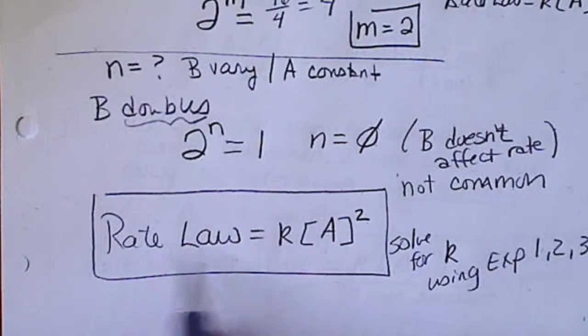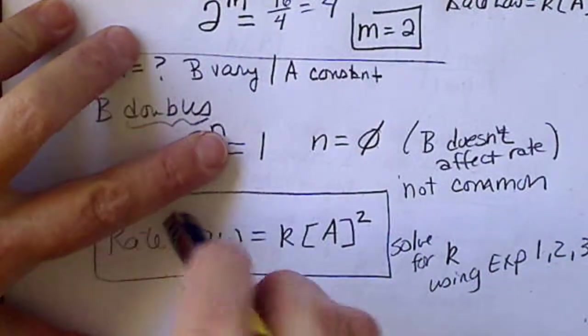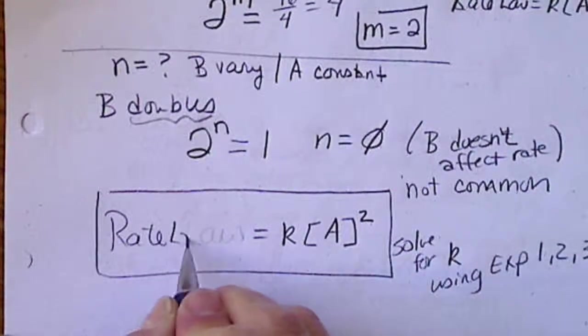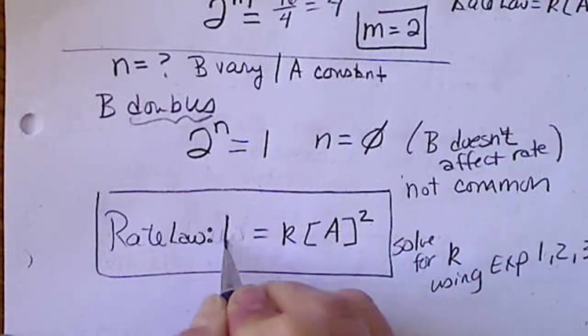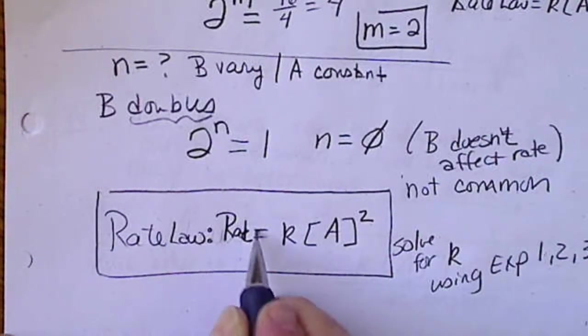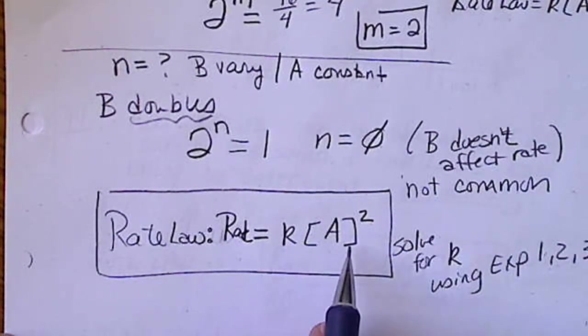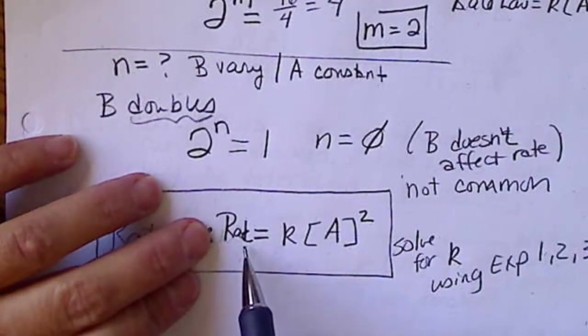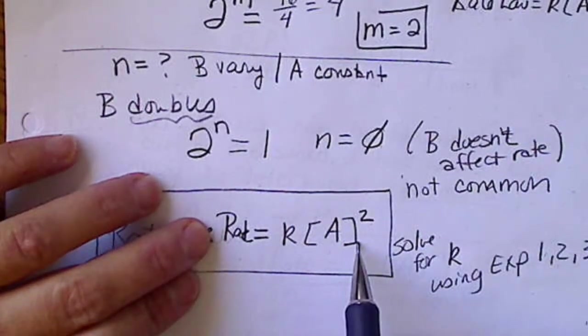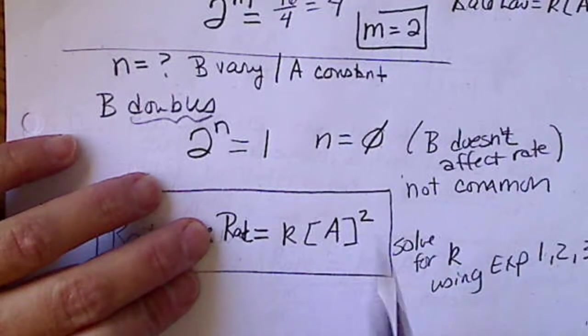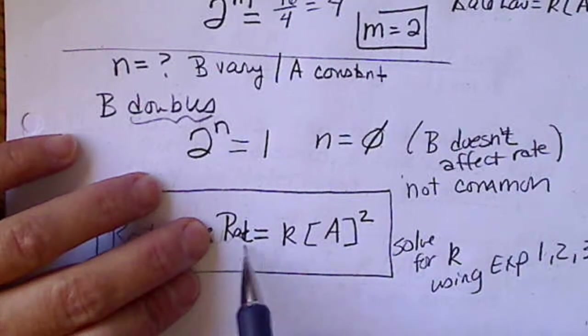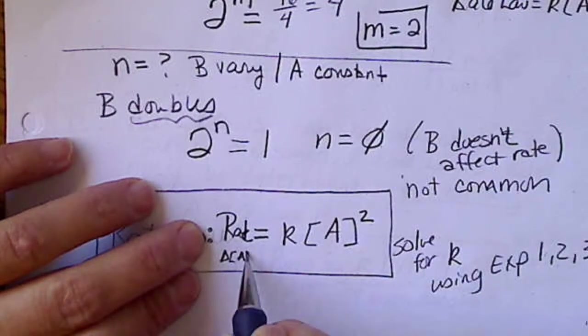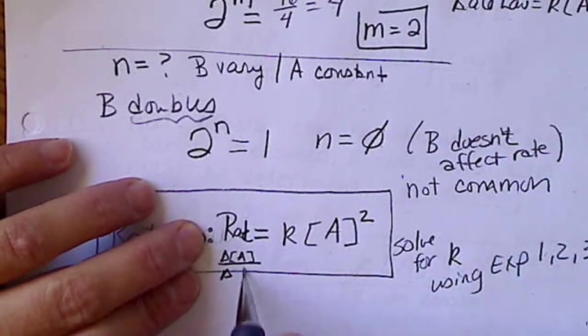the rate law happens to be second order in one reactant only. So, the rate law, oops, I messed up here. The rate law says that the rate equals KA squared. So, the rate law is the entire equation. Rate equals K, reactants raised to some power. So, the rate is the change in concentration over the change in time.